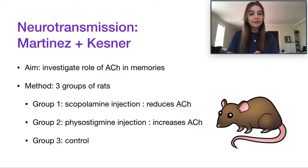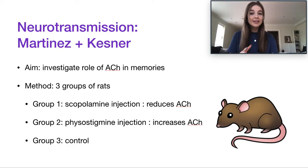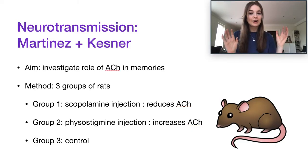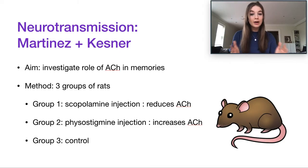They chose to investigate this through an experiment. Experimentation is a rigorous scientific method where you look for a cause-and-effect relationship. You manipulate one variable — the independent variable — to see what effect it has on the dependent variable. The dependent variable depends on the manipulation of the independent variable. It's a great way to isolate cause and effect and see how changing one thing affects another.